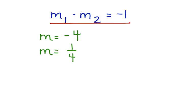If the product is negative 1, then these two lines are perpendicular. Let's do that now. Negative 4 times 1 fourth equals negative 4 over 4. And when we simplify that, it's negative 1. These two lines are indeed perpendicular.